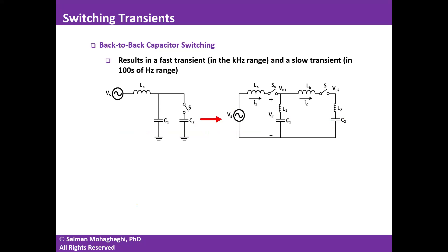A more interesting event happens when we have back-to-back capacitor switching. This occurs when you have one capacitor already connected to the system — C1 — and then you want to switch on a second capacitor, C2.